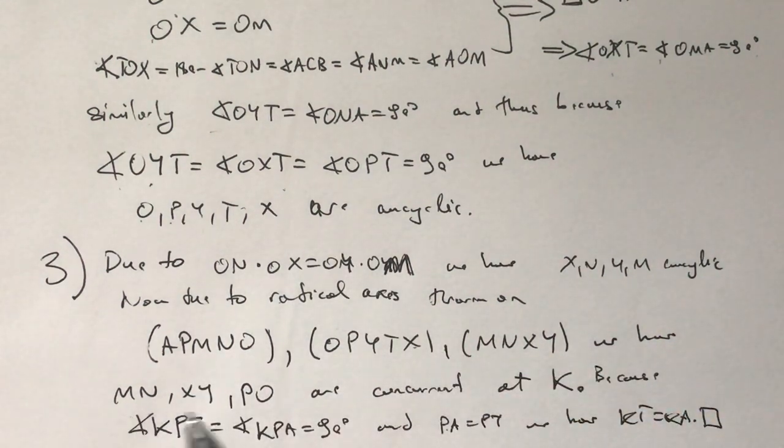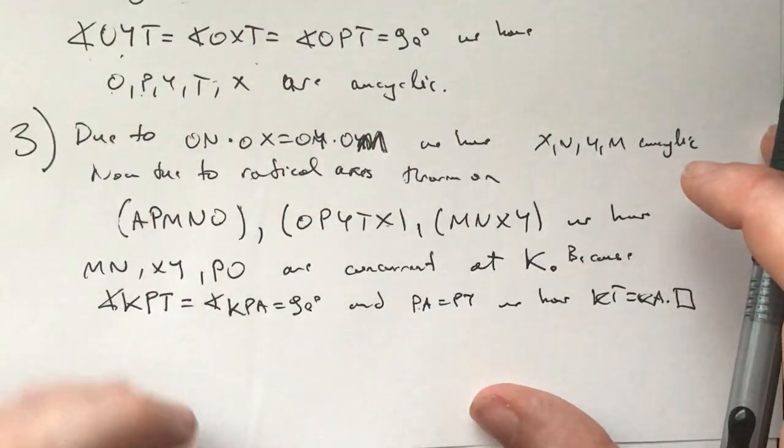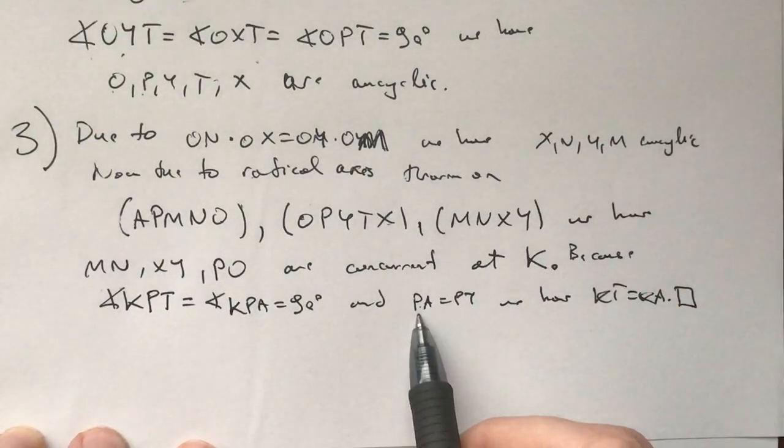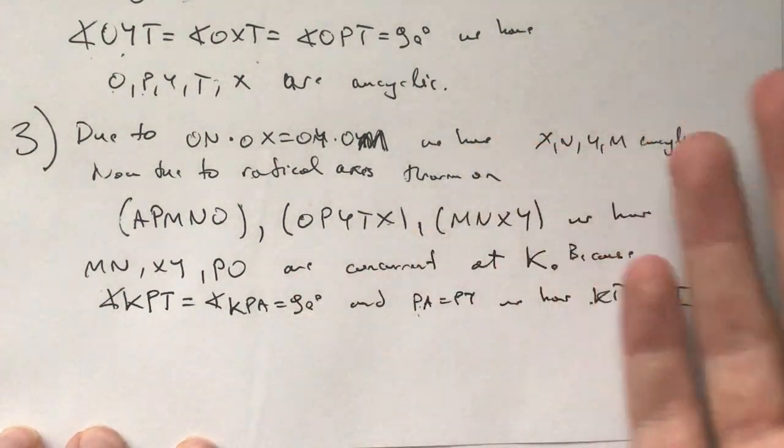And now due to OYT is OXT is OPT is 90, we have that OPYTX are all concyclic. And with this, we move on to our third and final claim, which is we find the final four concyclic points. And now due to the radical axis theorem on these three circles, we have MN, X, Y, and P are concurrent at K. And now because KPTA is KPA is 90 and PA is PT, we have KT is KA. And this solves our problem.